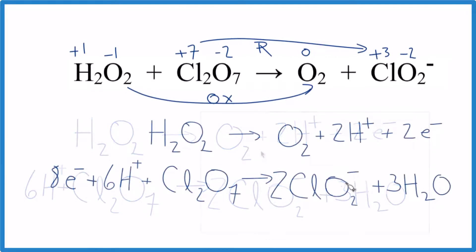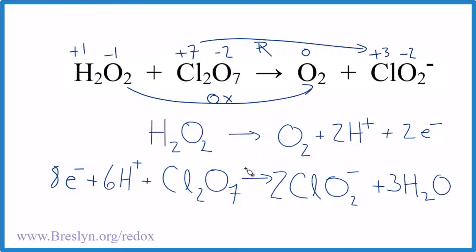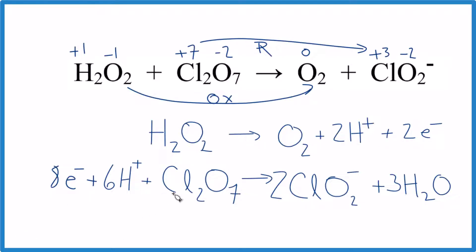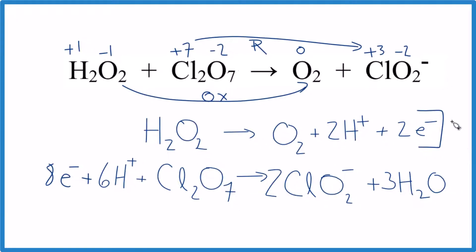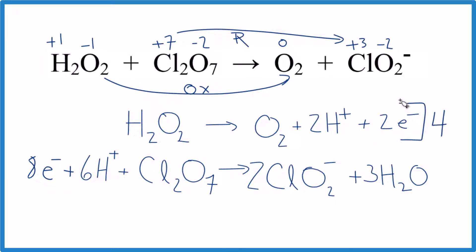Now our half reactions are balanced. Check that atoms and charge are the same on both sides — stop and verify that now. We have a problem though: the oxidation half reaction has two electrons and the reduction has eight. Since these must be equal, we multiply the oxidation half reaction by four. Four times two electrons gives eight electrons, matching the reduction half reaction.